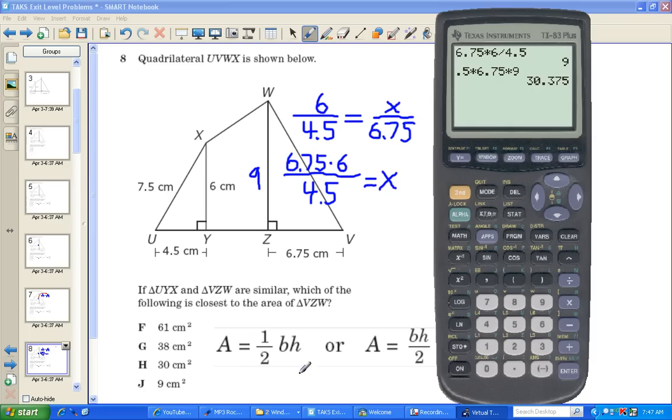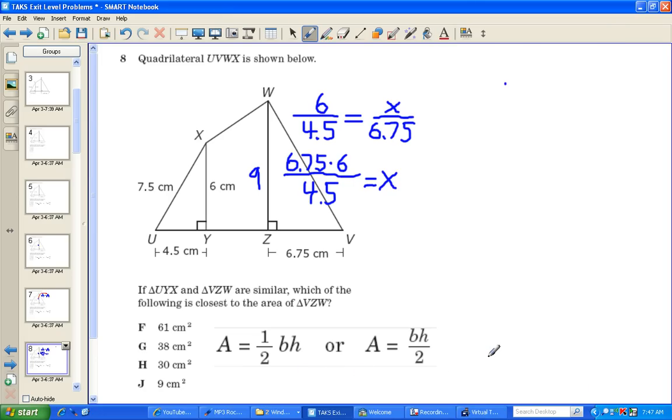And so we're going to go ahead and choose our answer, H. Now, the thing you have to see here is that the test writer has given you a couple more opportunities we haven't even encountered to make mistakes. If, in this proportion, you used 7.5 instead of the 6 and put 7.5 here, you would have calculated this answer here, G, 38 centimeters squared.